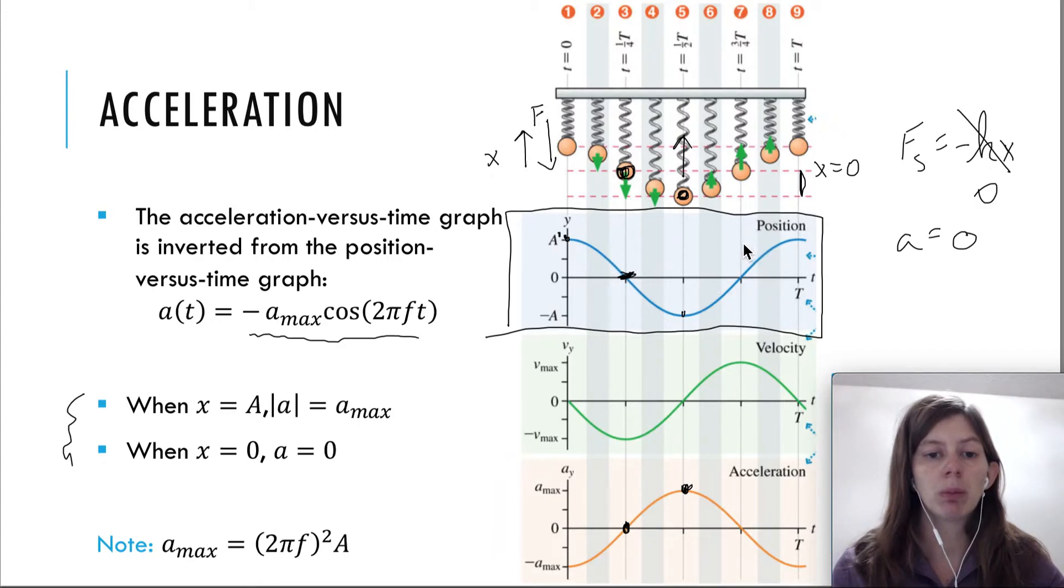And then the other thing that you want to be able to do from this section is when you're looking at this graph, whether you're looking at the graph or you're looking at the motion of the spring, you want to be able to identify at which location does the object have maximum velocity, or zero velocity, or maximum acceleration, or zero acceleration. So you want to be able to pick those points.